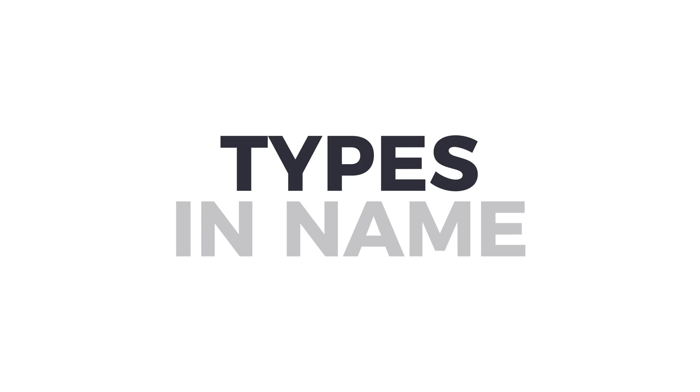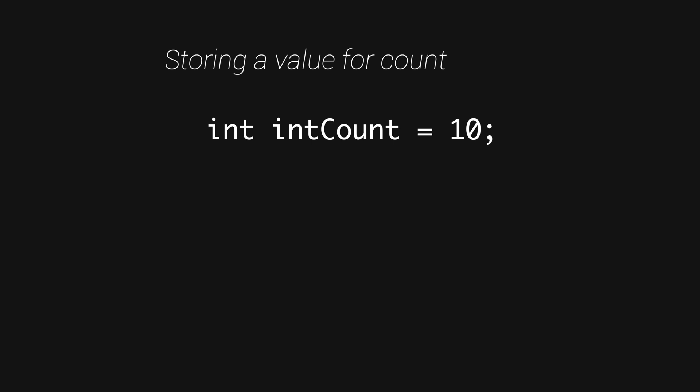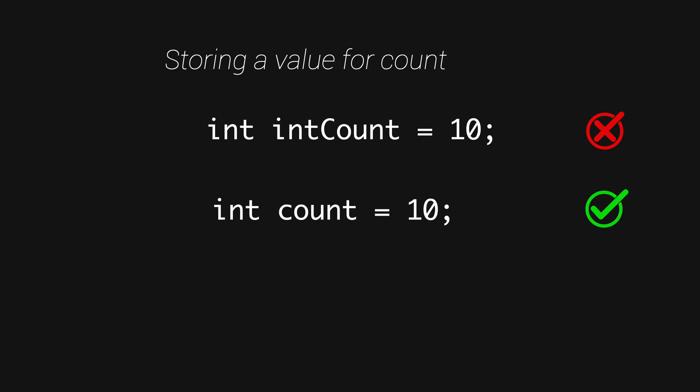Don't include types in your variable names. Generally, you should not embed the data type in the variable name. For example, if you are storing an integer count, rather than naming it 'int_count', just call it 'count' — the language type system will handle the type information for you.